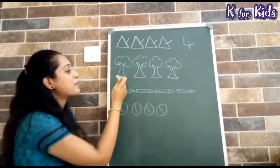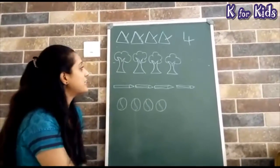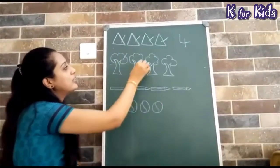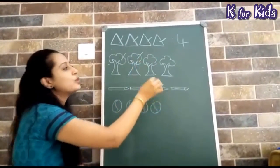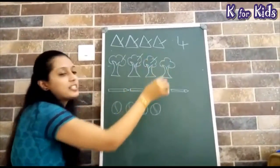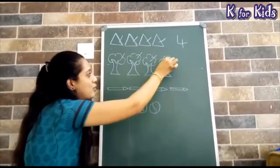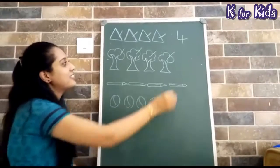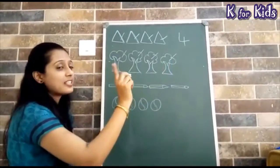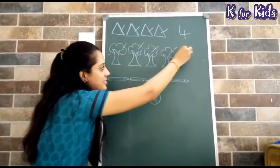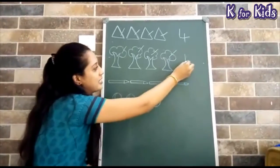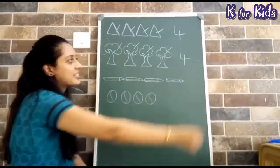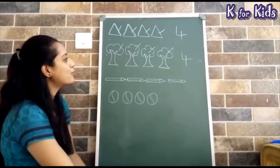Next, what do we have? Trees. Let's count. 1, 2, 3 and 4. Let's see again how to write it. Standing line, sleeping line and standing line. So what does it make? 4.